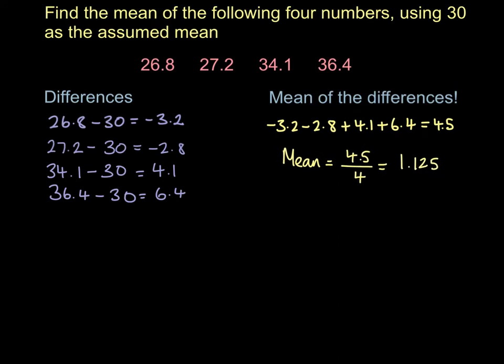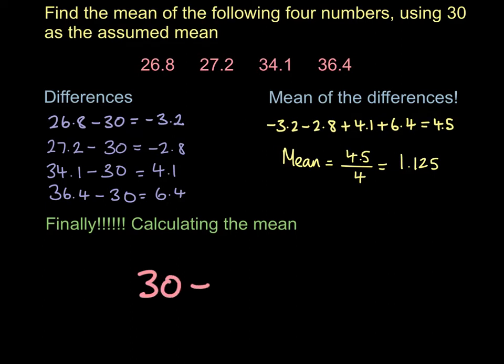Still not finished yet. That's not our mean. So finally, to calculate the mean, we take that mean of the differences, that value, and we add it to our guess. So we take 30, add 1.125. That's going to be 31.125. And then finally, we get our answer.